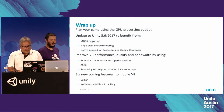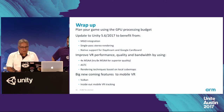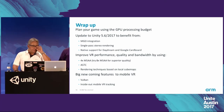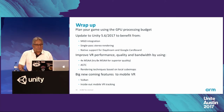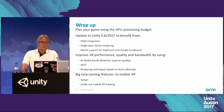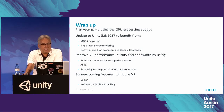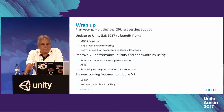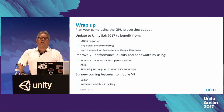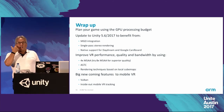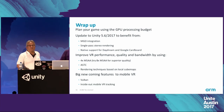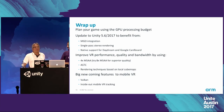Just a quick wrap-up: plan your game using the GPU processing budget. Update to Unity to benefit from MGD integration, single-pass stereo rendering, and other features the latest Unity version provides. Improve your VR performance by using multi-sample anti-aliasing, ASTC, and mobile-friendly rendering techniques. Keep an eye on next year, when we expect Vulkan to come to VR with its benefits, and inside-out mobile tracking is already a reality. Thank you very much for your attention. We will be outside if there are any questions.